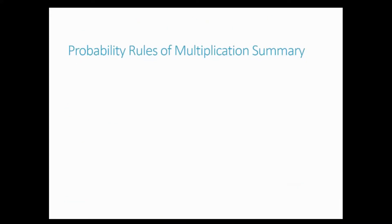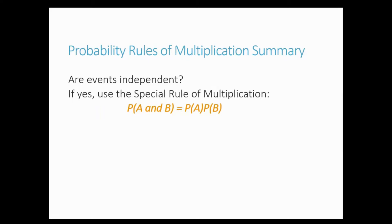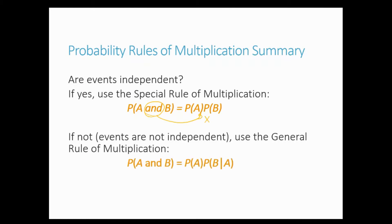So when we have probability rules of multiplication, we need to figure out first if events are independent. If they're independent, then we use the special rule of multiplication: the probability of A and B equals the probability of A times the probability of B. If the events are not independent and they affect one another, then we use the general rule of multiplication: the probability of A and B equals the probability of A times the probability of B given that A has happened already, and because it happened already it has affected B.